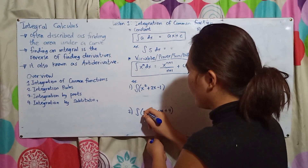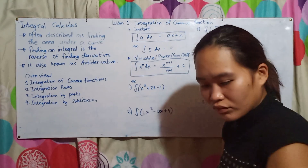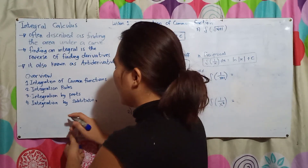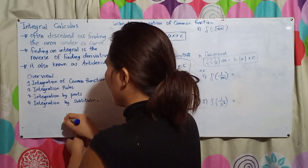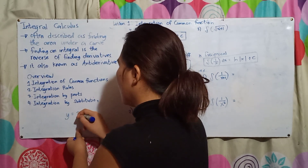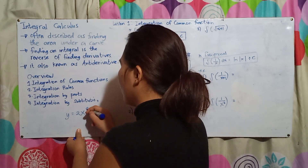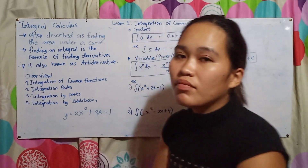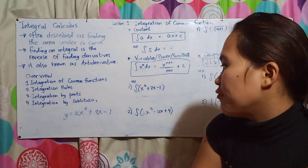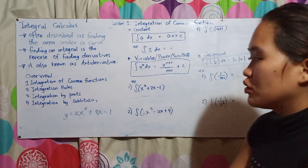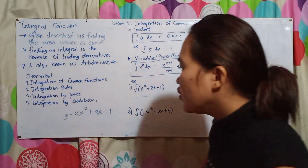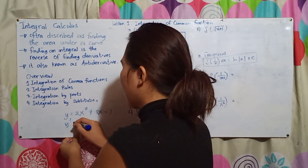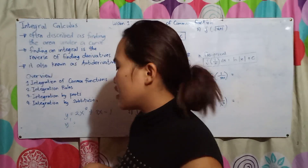For example, you have the given function y = 2x² + 2x − 1. To find the first derivative, you subtract 1 from the exponent. So for 2x², the exponent becomes 1 and the coefficient becomes 4x.